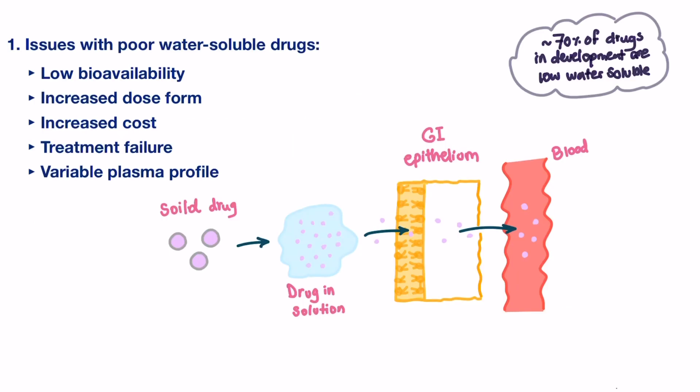Poor water-soluble drugs are of a big issue through oral route delivery because for any drug, in order to be absorbed through GI wall to the blood, it needs to undergo dissolution, where drug in solid form becomes a solution. Then, if it exhibits good permeability, it can cross the membrane.